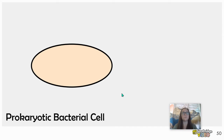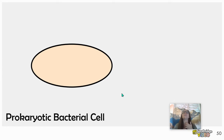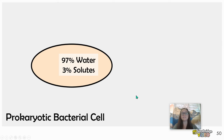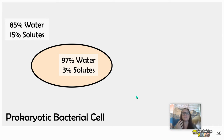Maybe in your lives you've been told that if you have a sore throat, someone says, 'Hey, why don't you gargle with warm salt water?' The sore throat is actually caused by bacteria multiplying in the cells and tissues of your throat. So if inside the bacterium is 97% water and 3% solutes, and then you add salt water to its environment — that's you gargling — the solution around that bacterium is now 85% water and 15% solutes. In this example, the salt is a solute.